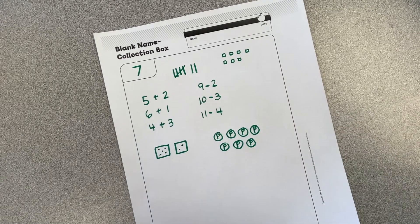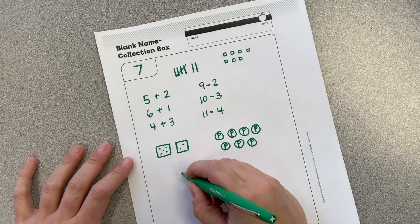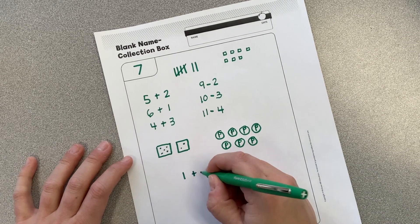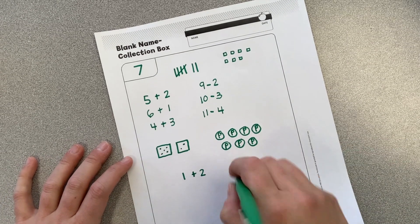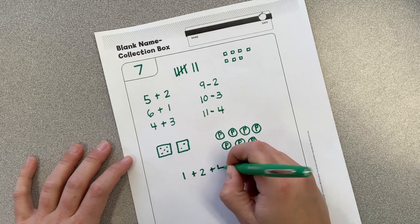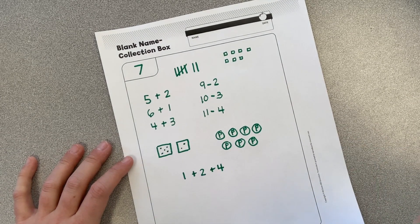Oh, I wonder if I could add three numbers to make seven. How about one plus two? That would equal three. So I would need four more, plus four. One plus two plus four. I could draw a domino.